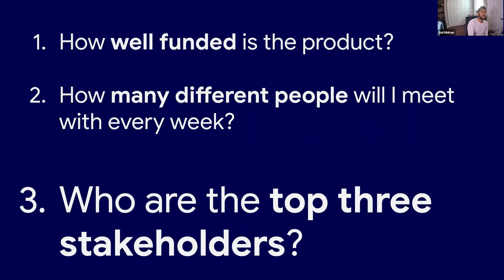And finally, very concretely: who are the top three stakeholders for the success of your project? Is it the VP of Sales and VP of Engineering? The VP of Partnerships and VP of Marketing? The VP of Product and VP of Legal? You can try to get clarity on this even before you start the job, and it will give you a rough sense of what functions you're going to be spending most of your time interacting with.